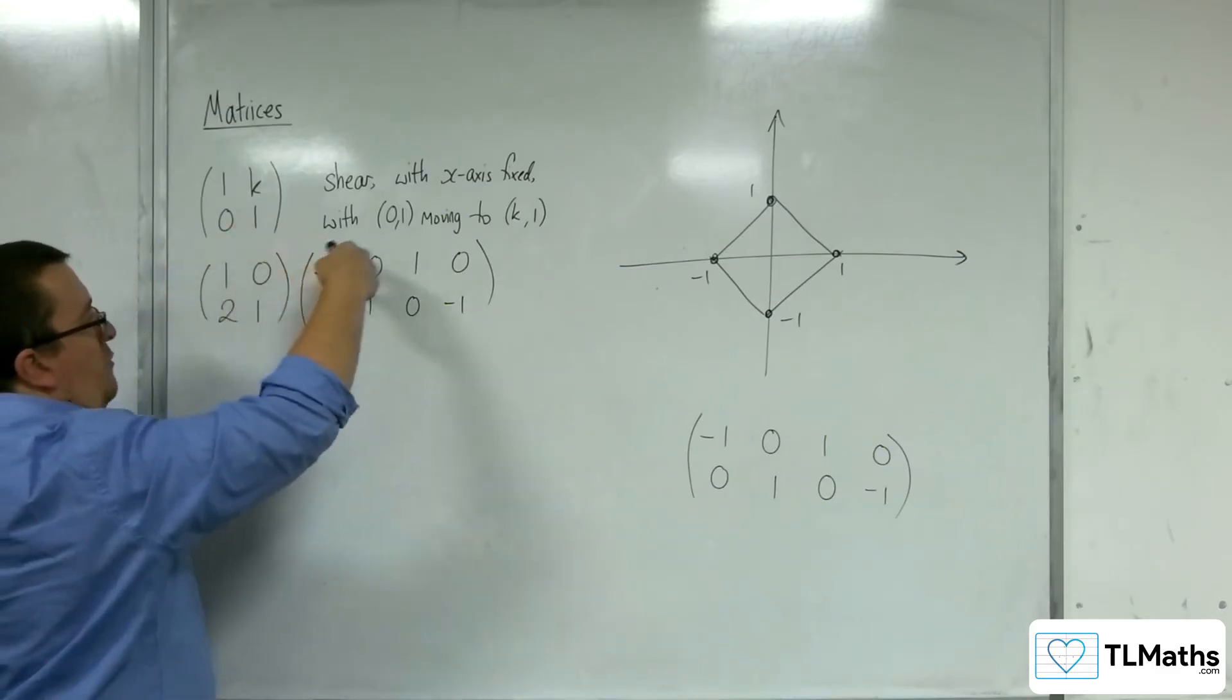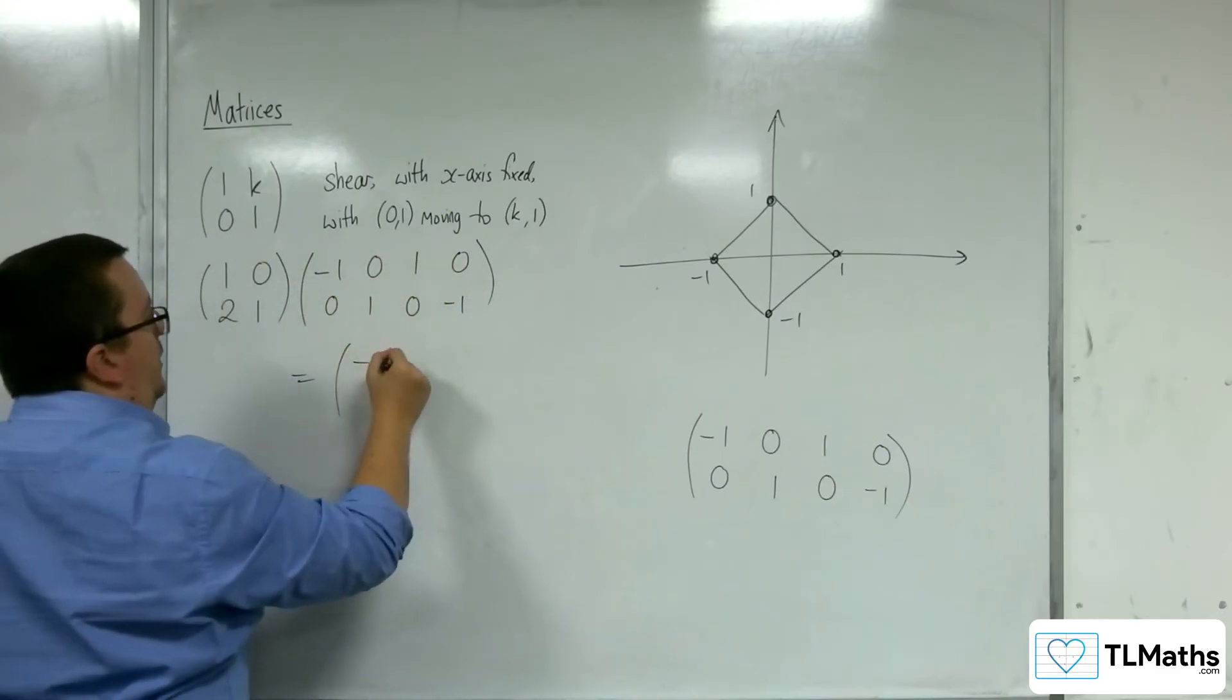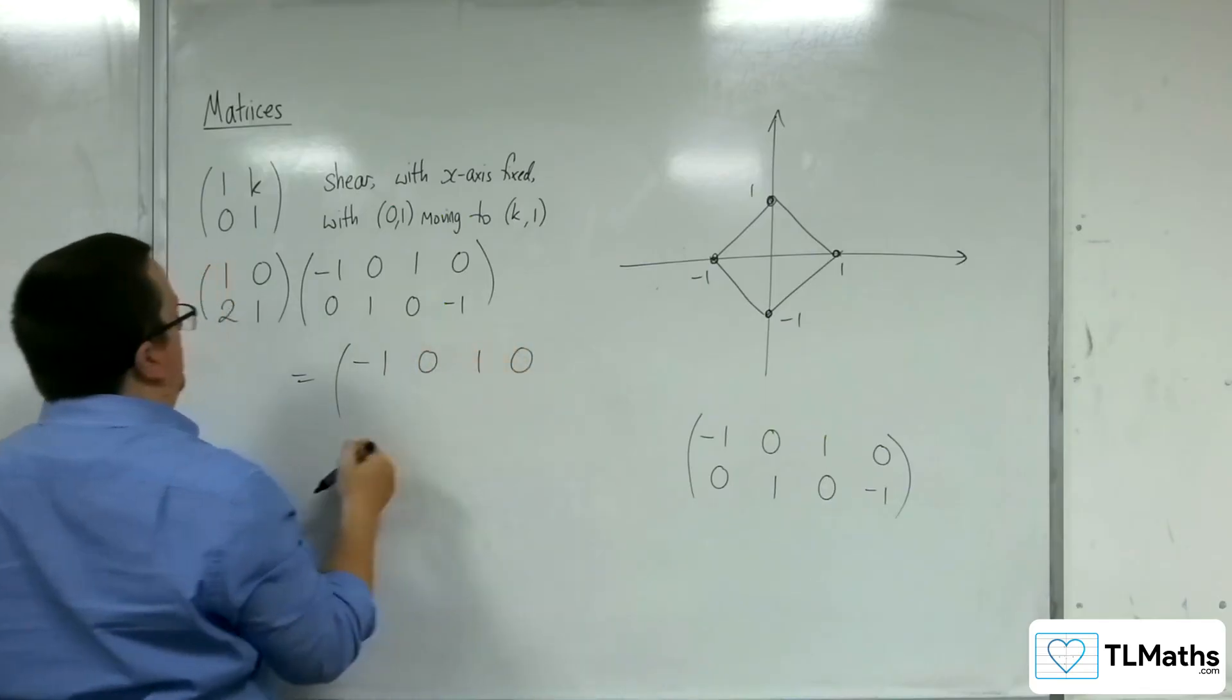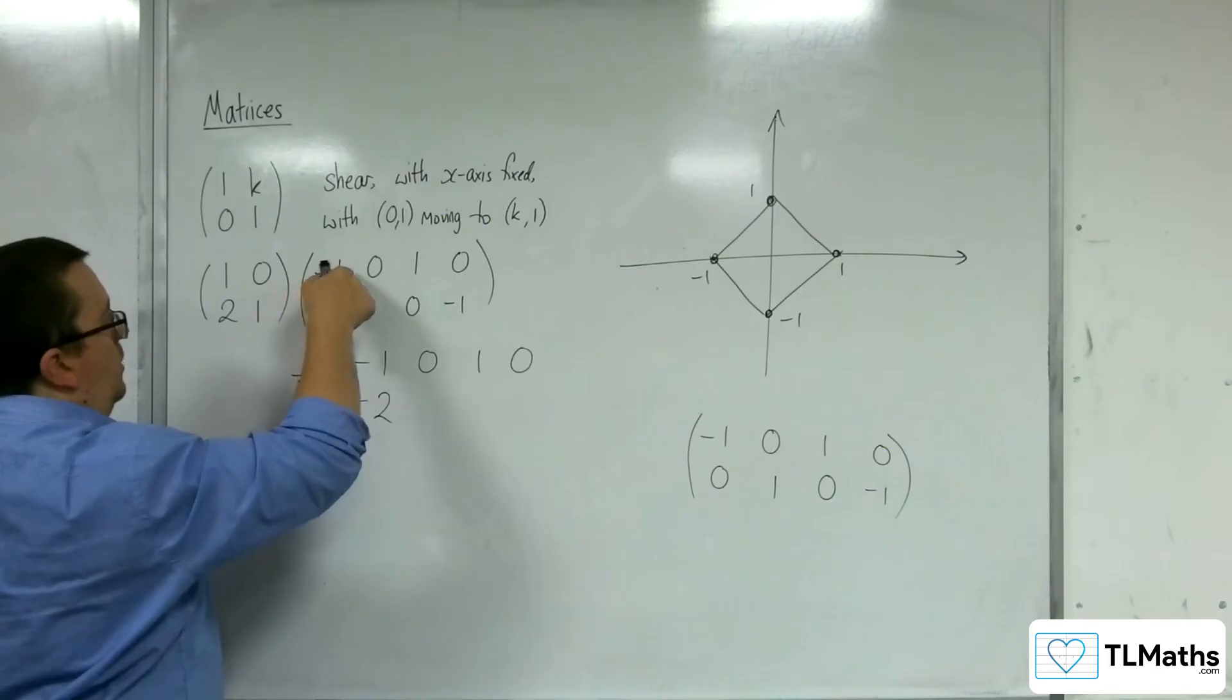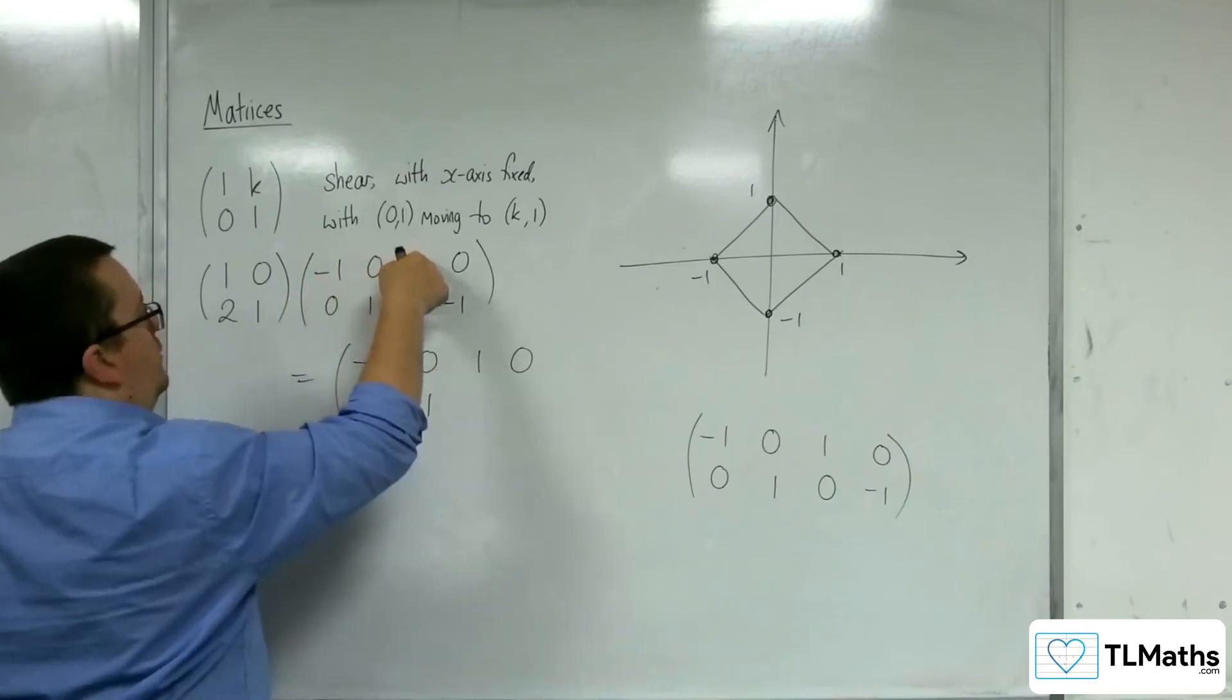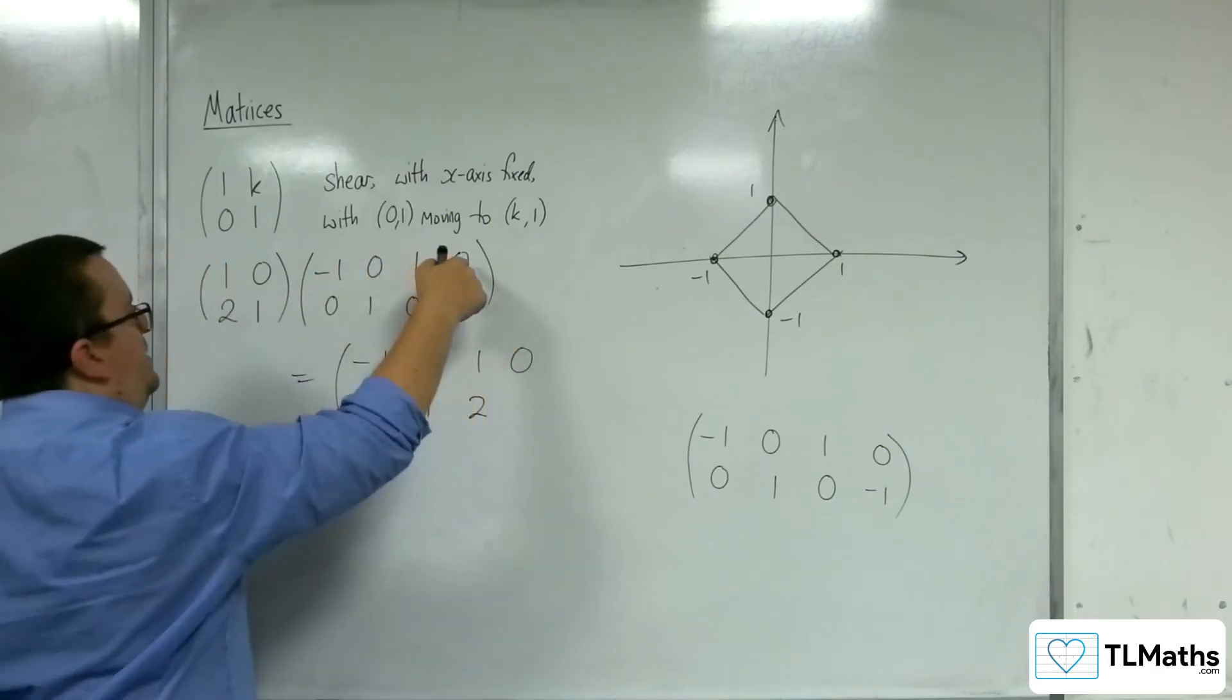So when I multiply the 1, 0 by each of these, I'm just going to get the top row. So negative 1, 0, 1, 0. 2, 1 multiplying with each of these, I'm going to get negative 2, 1, 2, and negative 1.